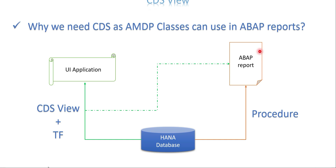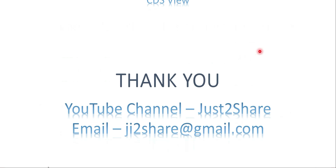This is the clarification about CDS and AMDP: whenever you need an ABAP layer included to achieve a business requirement, you need AMDP. If you want a CDS view, go with table function. If the same data is accessed only through ABAP reports or ABAP objects, go with procedures.